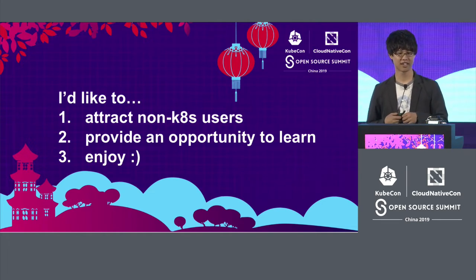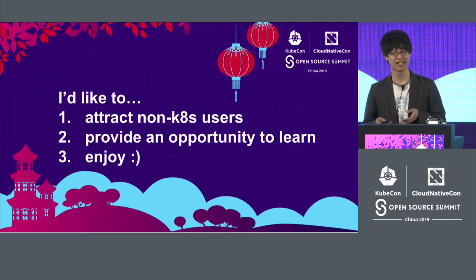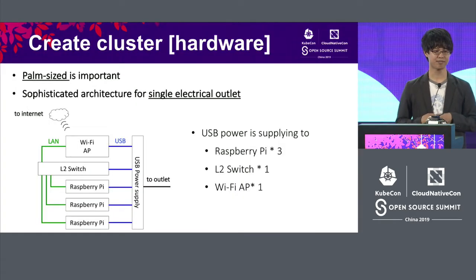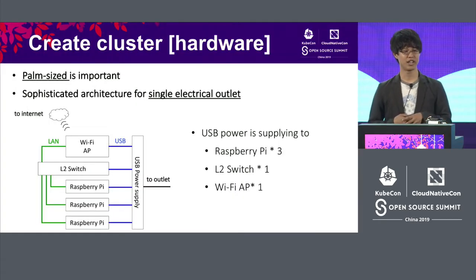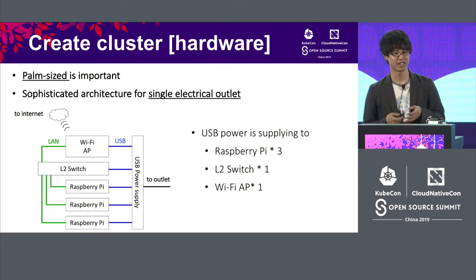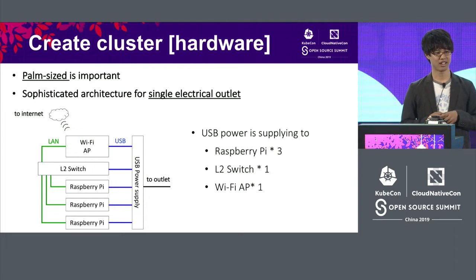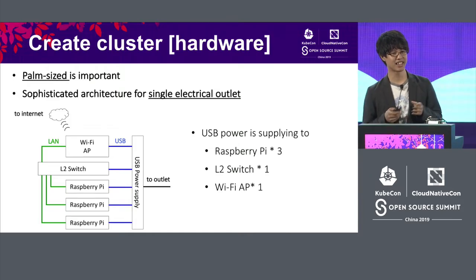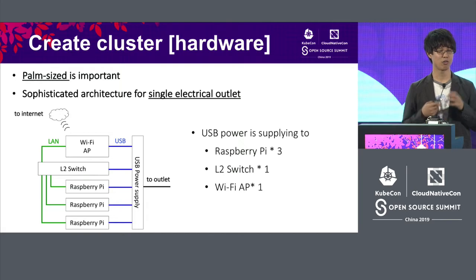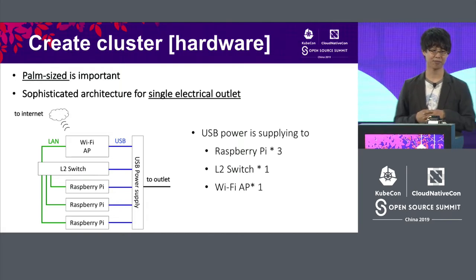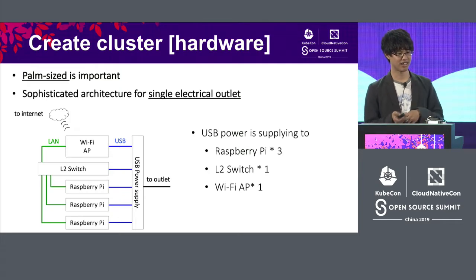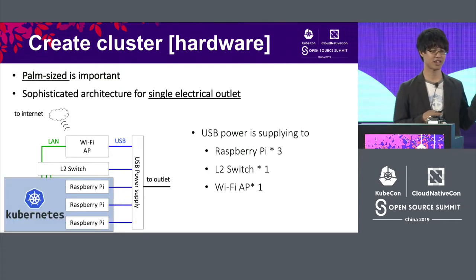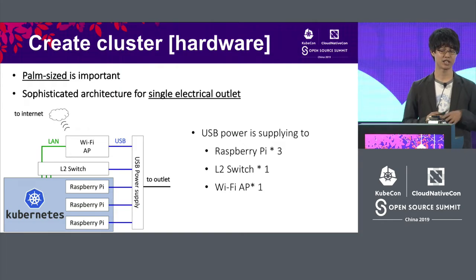So we gather students and build a cluster for increasing the Kubernetes community. First step, we need to build a hardware cluster. Palm size and single power outlet is important, so we decided to use USB power supply and install Kubernetes on Raspberry Pi.